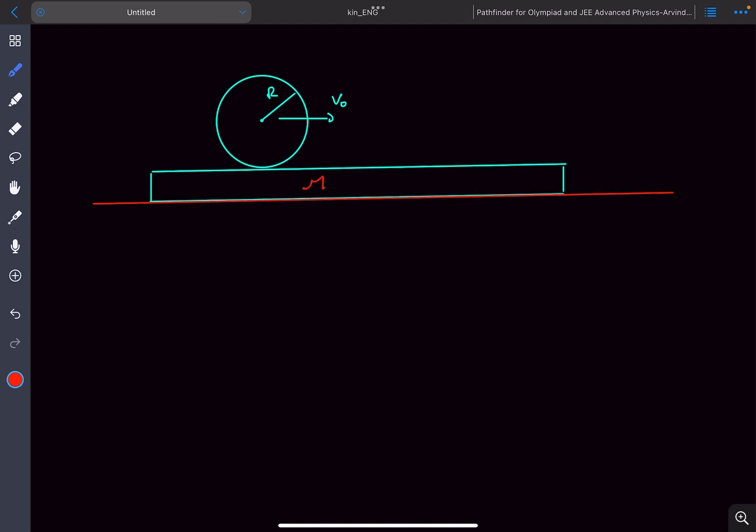We have a plank of mass m on the ground. The friction coefficient between the sphere and the plank is mu, and there's no friction between the ground and the plank. The sphere of mass m is given an impulse, gaining velocity v0. We need to find the time at which this sphere starts rolling.